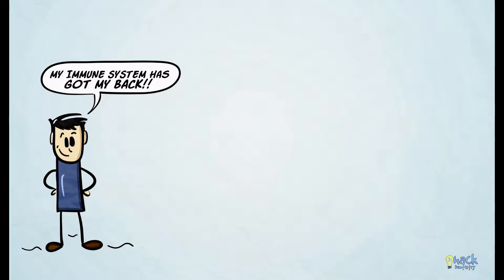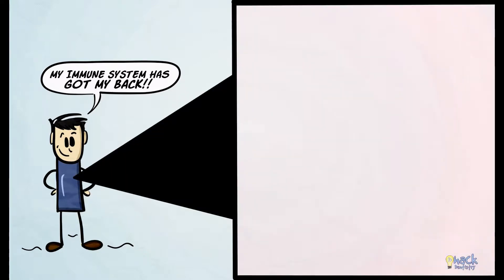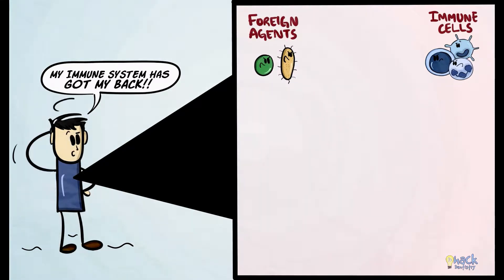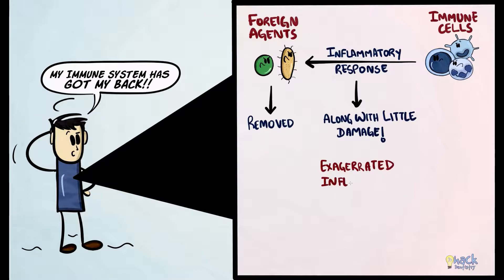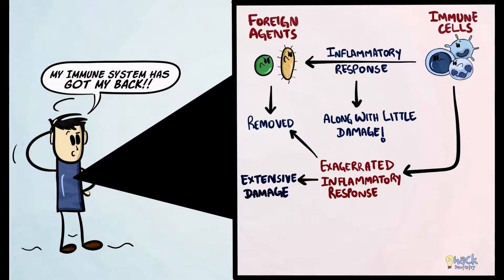The immune system protects the human body against disease by dispatching immune cells whenever the body encounters foreign material or antigens. These immune cells elicit an inflammatory response to remove or eliminate the foreign antigen without causing much damage to the host. However, under certain conditions, the host may elicit an exaggerated or inappropriate immune response to a foreign antigen, causing much damage to host tissues. This exaggerated or inappropriate immune response is termed hypersensitivity.